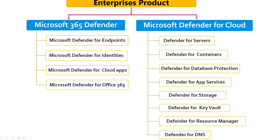Under the Microsoft 365 suite we have four types of Defender. Inside Microsoft Defender for Cloud we have: Defender for Servers, Defender for Containers, Defender for Database Protection, Defender for App Services, Defender for Storage, Defender for Key Vault, Defender for Resource Manager, and Defender for DNS. All of these defenders have different purposes and different ways to protect your infrastructure.